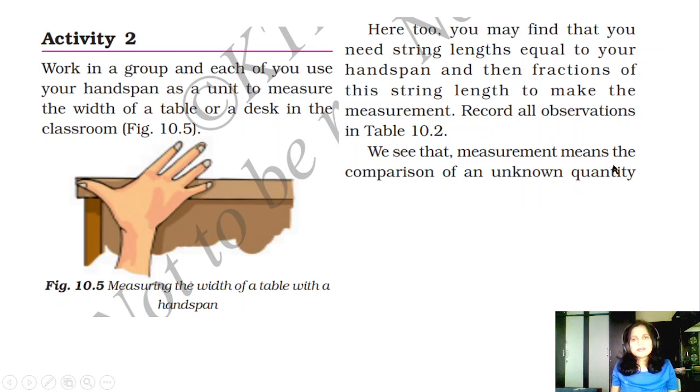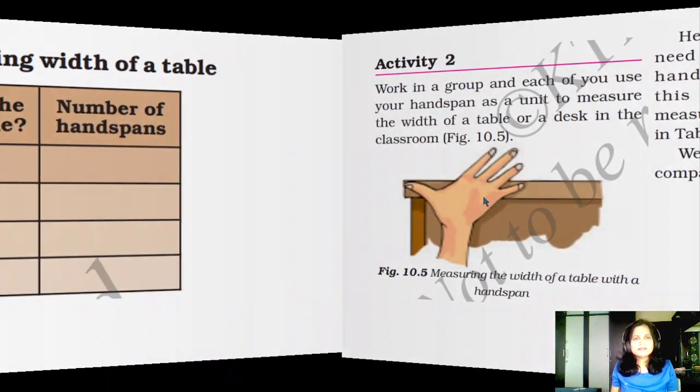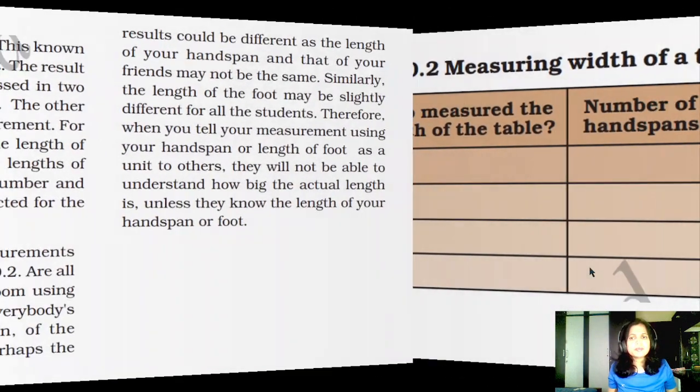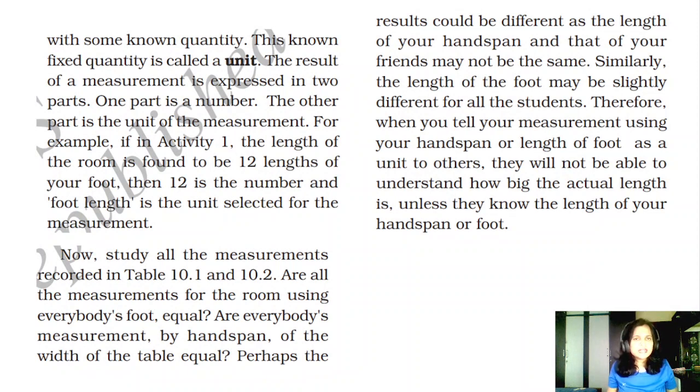We see that measurement means the comparison of an unknown quantity. Here, who measured the width of the table? Name you write here. Number of the hand spans, you will get different students, suppose here A, B, C, D. Four students are there. Number of the hand spans may be 12, 30, 10, some students may be 9 because his hand span is bigger, his hand is bigger. That's why number of hand spans will reduce, but the size of the table will remain same. You are showing different units.